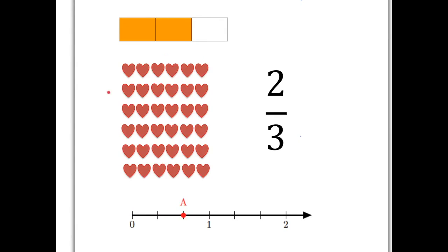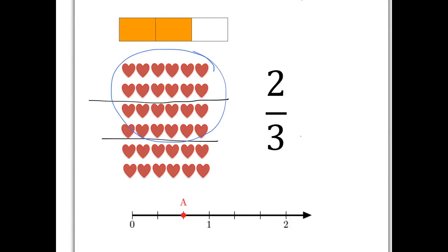If we take this group of hearts, we can see two-thirds there by doing what we always do. We divide into three absolutely equal parts and then we choose to take two of those equal parts. So that group of hearts here is two-thirds of the whole lot of hearts.